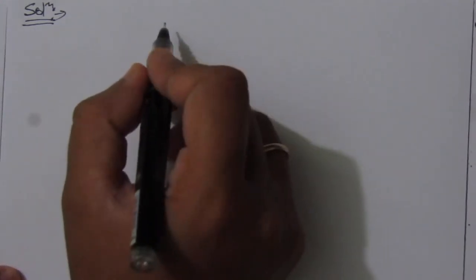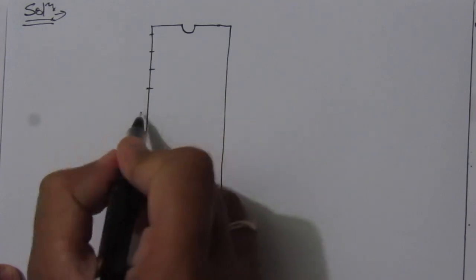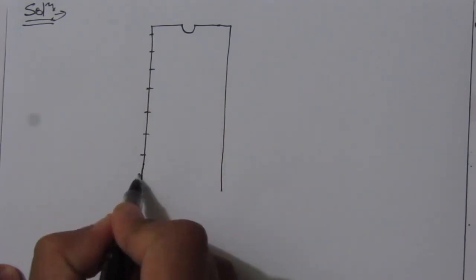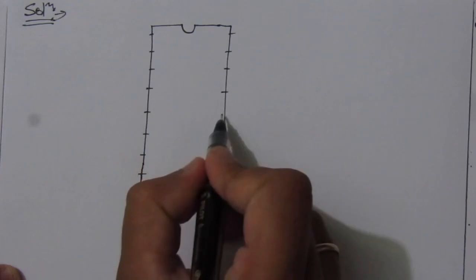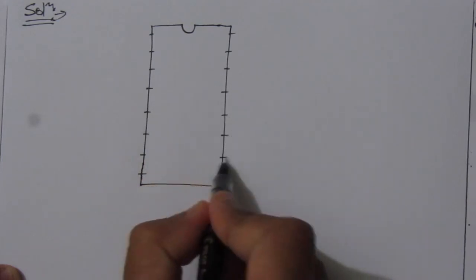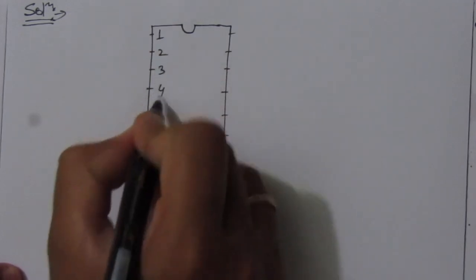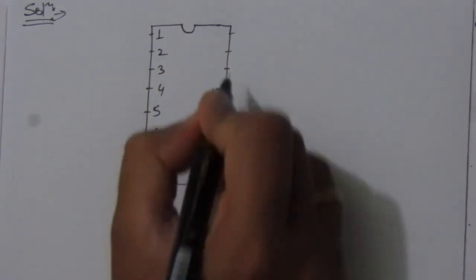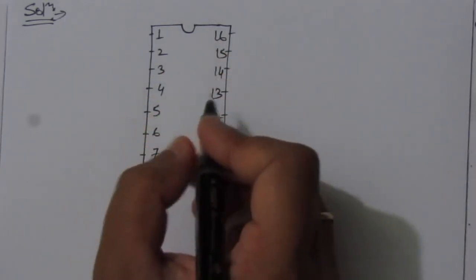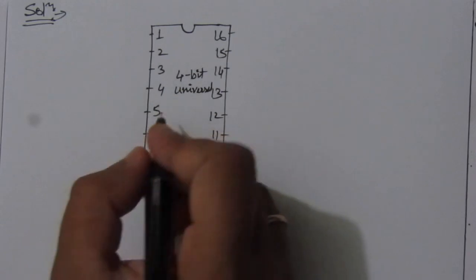Let me draw the block diagram of the IC. The IC has 8 pins on each side, making it a 16-pin IC. This IC is a 4-bit universal shift register, and inside the IC package we enclose the circuit from figure 6.7.